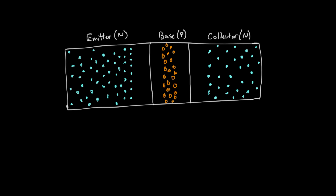Taking a closer look at the inside: we've got the emitter, which is N-type material with extra free electrons. We've got the base, which is P-type material with holes that are free to move around. The collector is also N-type, so it also has free electrons. At each of the P-N junctions there is a depletion region — I've exaggerated it here — because electrons from the N-type material fill in holes in the P-type material and neutralize each other, leaving no charge carriers in those regions.